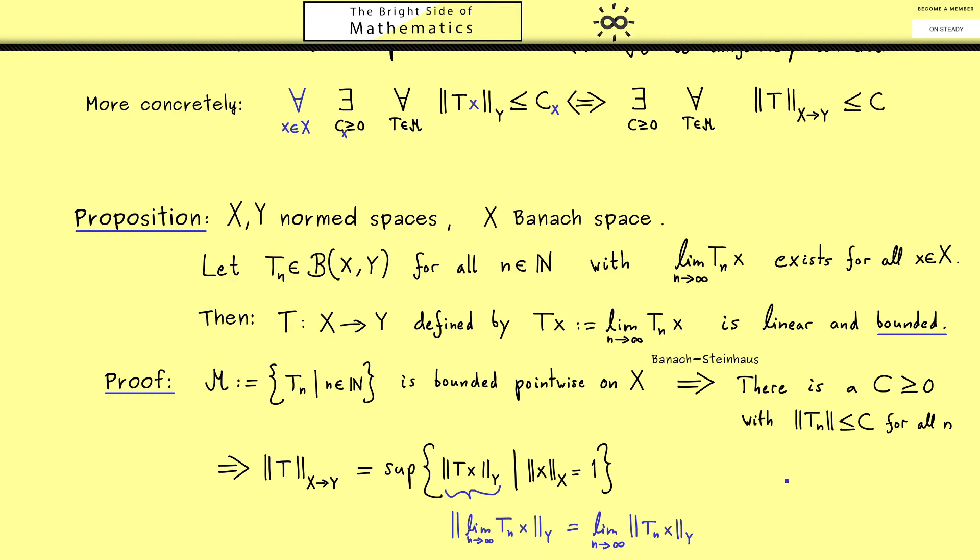At this point we can use that the operator norm is bounded by C, so we know this whole norm is also bounded by C. x has norm 1, so we don't need that, and we also don't need the limit here. And there we have our result.